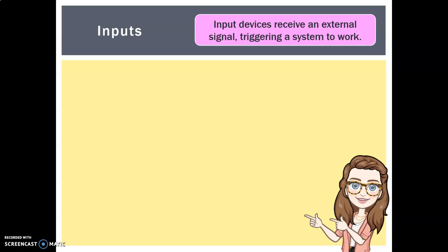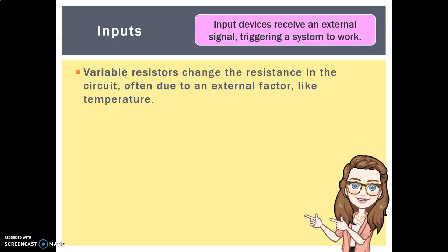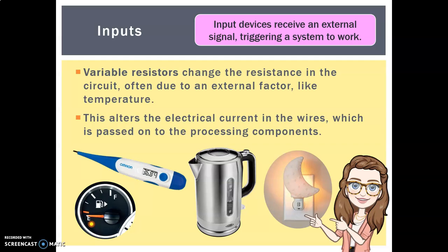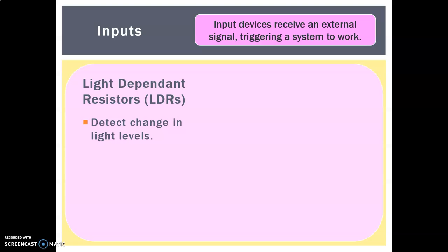Let's look deeper at inputs. Input devices receive an external signal triggering a system to work. Variable resistors change the resistance in the circuit — often due to an external factor like temperature — which alters the electrical current in the wires. This is then passed on to the processing components that will dictate what they're going to do. Examples include a kettle, a night light, a thermometer, and a fuel sensor in a car.